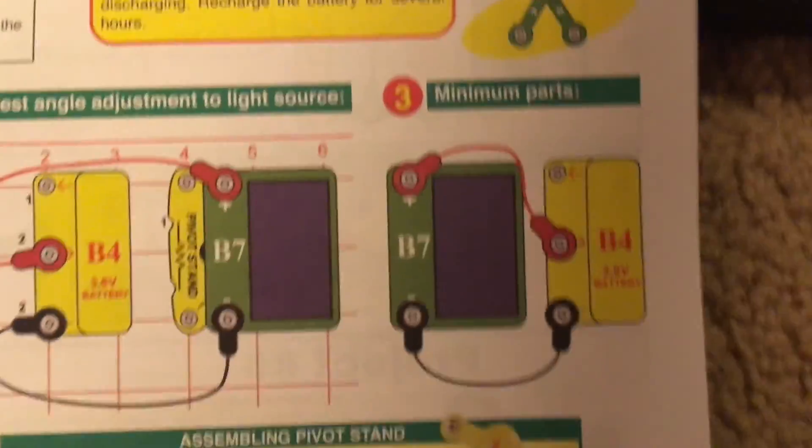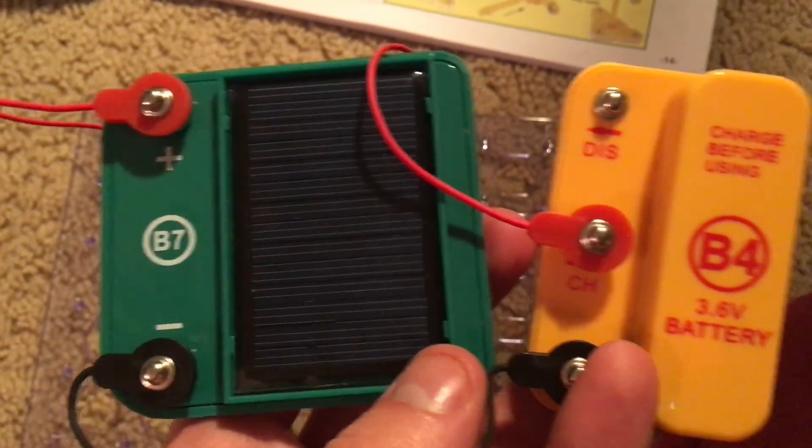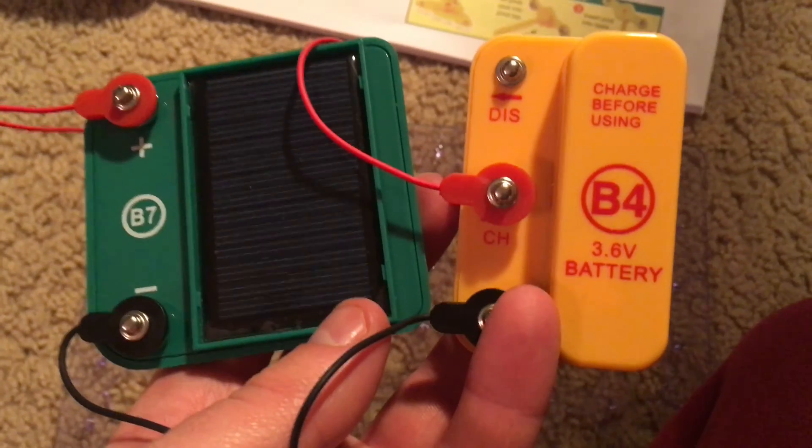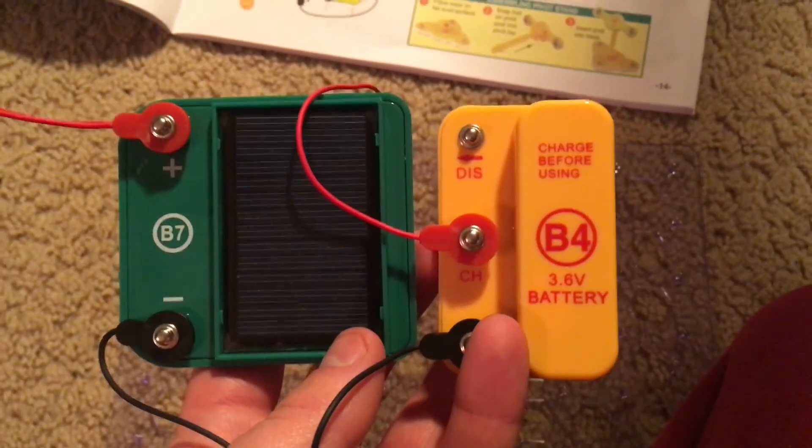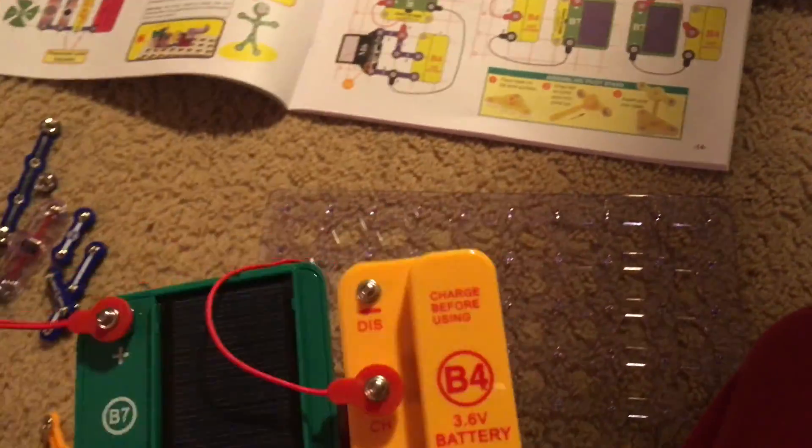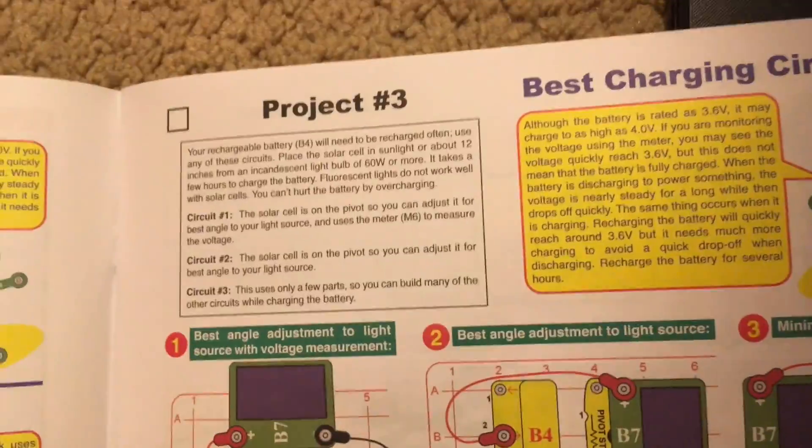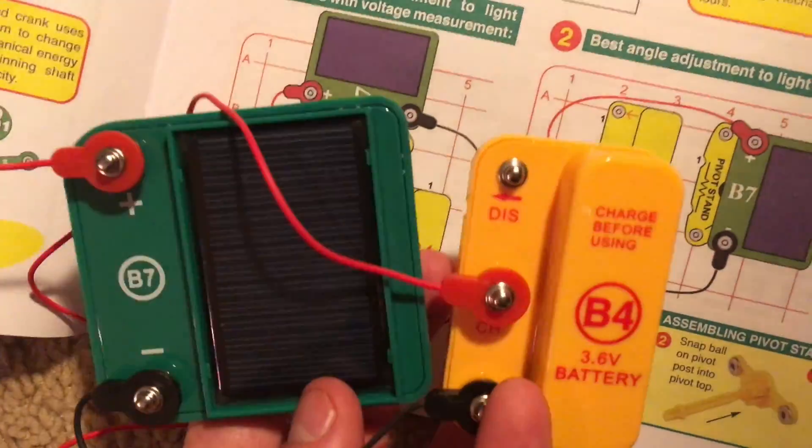The third circuit uses the least parts. We just use the battery, the solar cell, and the two jumper wires which are red and black to charge B4. And this circuit is easy to carry around. We do not need the base grid for it. And you can build many other projects with the other parts while you're charging the battery.